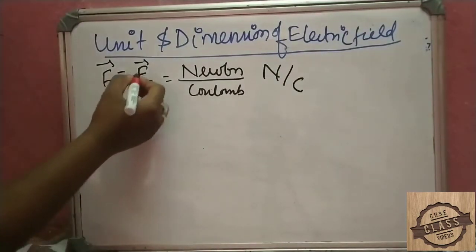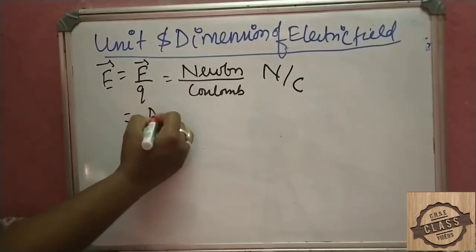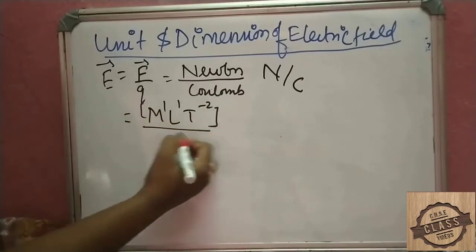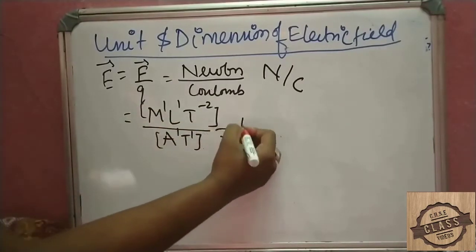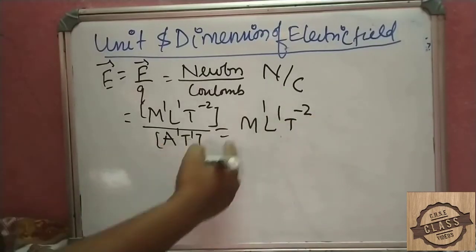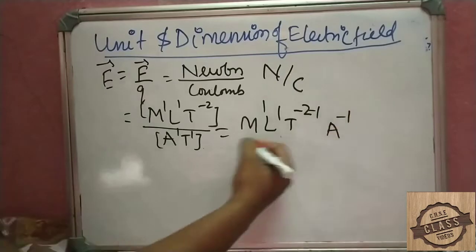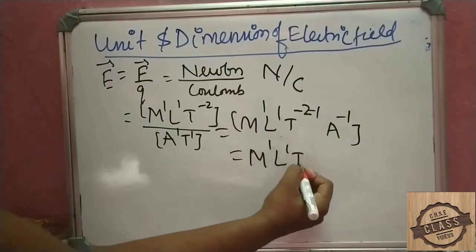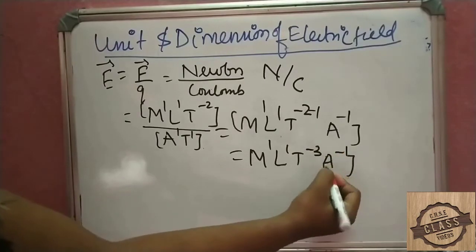For the dimensional formula: force has dimensions M¹ L¹ T⁻², divided by charge which has dimensions A¹ T¹. Working this out: M¹ L¹ T⁻² divided by A¹ T¹ gives M¹ L¹ T⁻³ A⁻¹. So the dimensional formula of electric field intensity is M¹ L¹ T⁻³ A⁻¹.